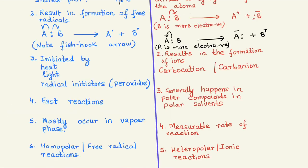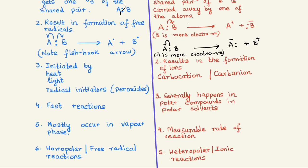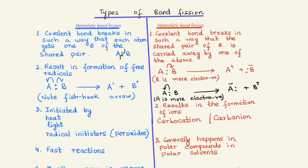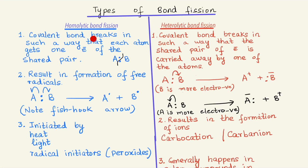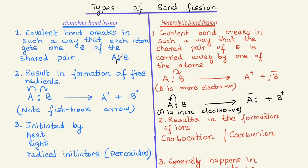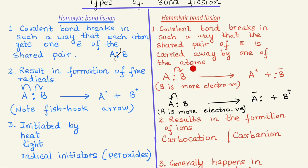I've tabulated the differences for you. Types of bond fission: first, in homolytic bond fission the covalent bond breaks such that each atom gets one electron of the shared pair. In heterolytic bond fission, the covalent bond breaks such that the shared pair of electrons is carried away entirely by one of the atoms — shown with two examples: when B is more electronegative and when A is more electronegative.